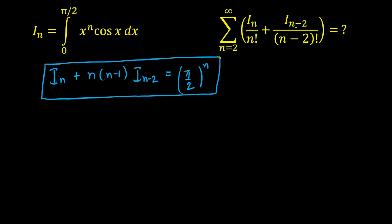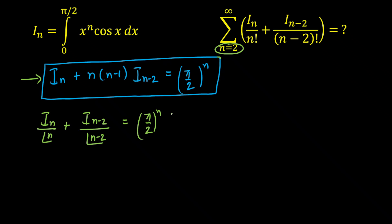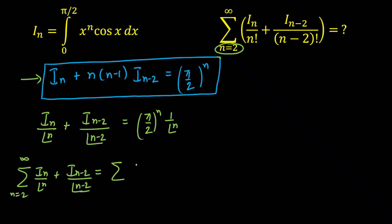Now we need to calculate I(n)/n! + I(n-2)/(n-2)!. Dividing the reduction formula by n!: I(n)/n! + [n(n-1)·I(n-2)] / n! = (π/2)^n / n!. Since n·(n-1)/n! = 1/(n-2)!, this becomes I(n)/n! + I(n-2)/(n-2)! = (π/2)^n / n!. Taking the summation of both sides from n = 2 to infinity gives the sum on the right as Σ (π/2)^n / n! for n from 2 to infinity.